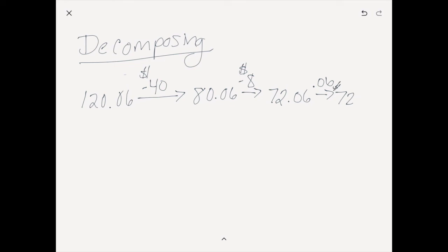After subtracting the 6 cents, the student still needs to figure out how much is left to subtract, using number sense to see there's 79 cents still to subtract, getting them to $71.21. This is why we don't directly teach these strategies to students — if they don't have number sense they'll just get frustrated. We want them to be able to use these strategies if they see ways to break apart numbers, but we don't need to force them.